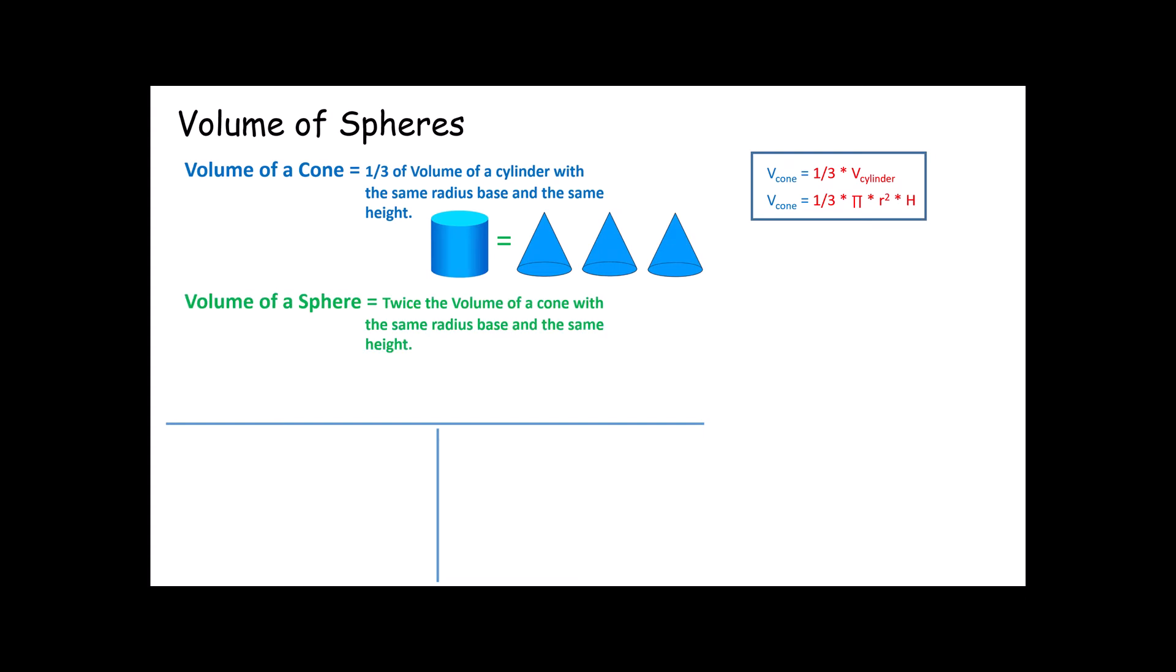Instead, we're going to talk about the fact that the volume of a sphere is twice the volume of a cone with the same radius base and the same height. You see, cylinders, cones, and spheres are all very much related to one another. Because if they are all based on the same circles, we can use the volume of one to find the volume of others.